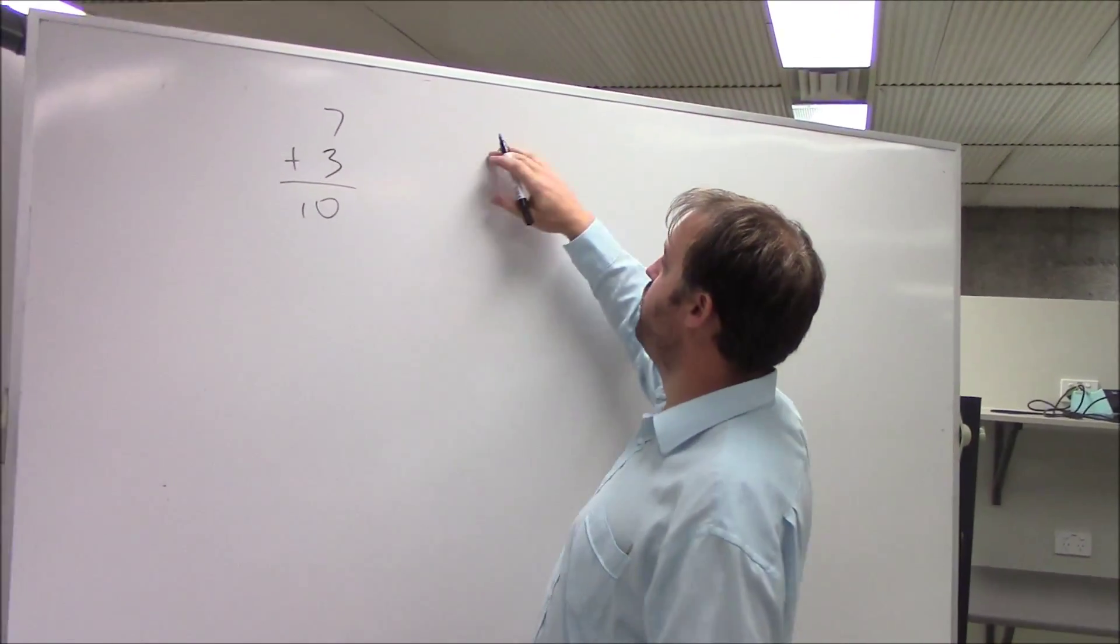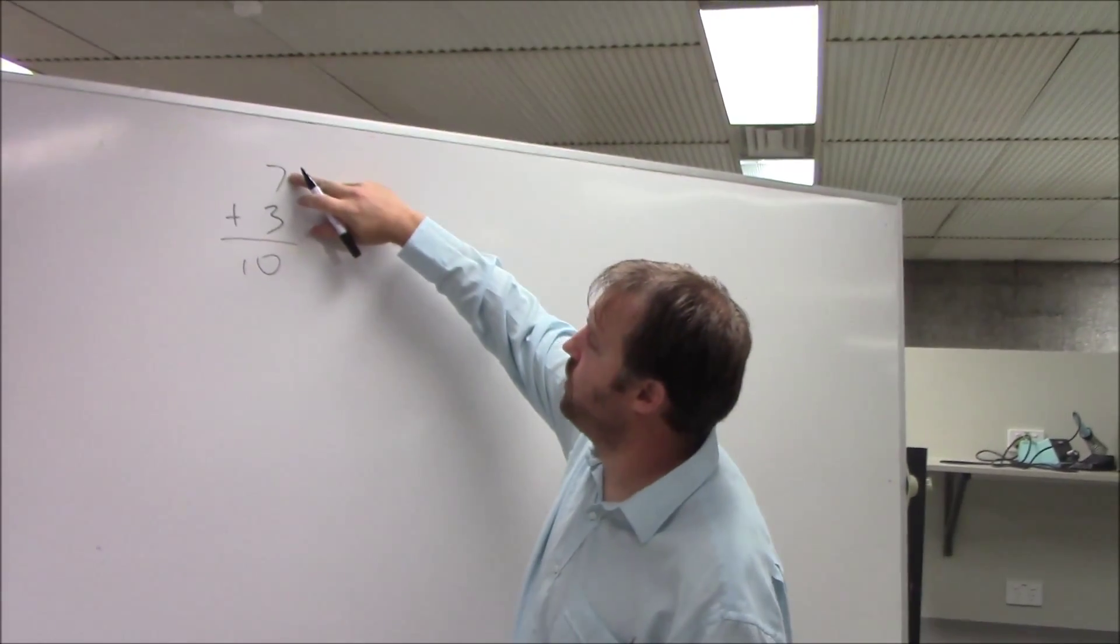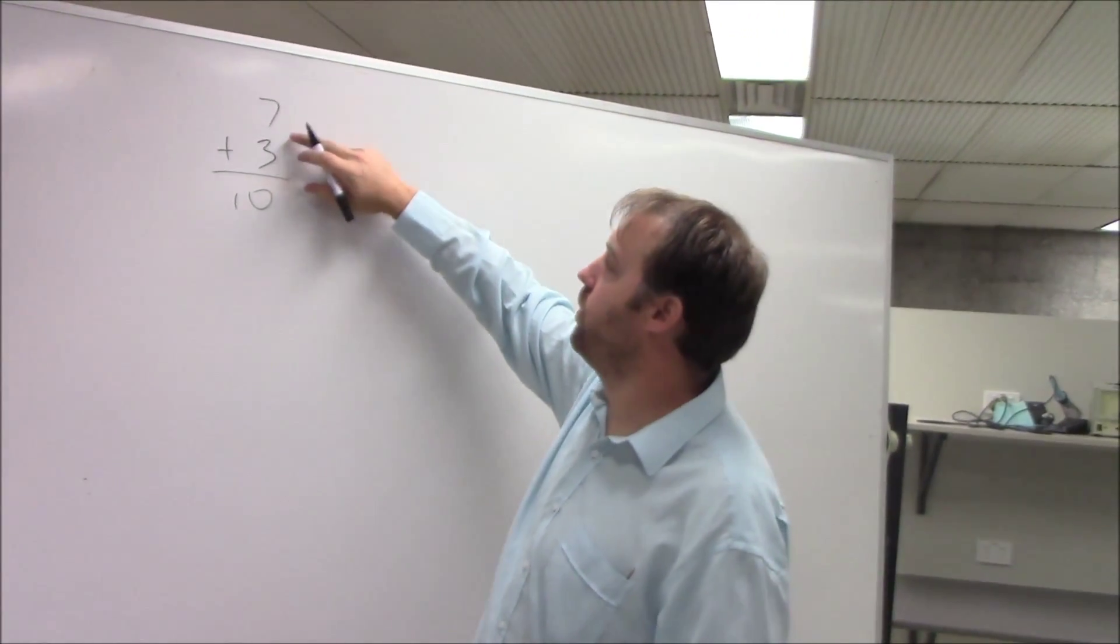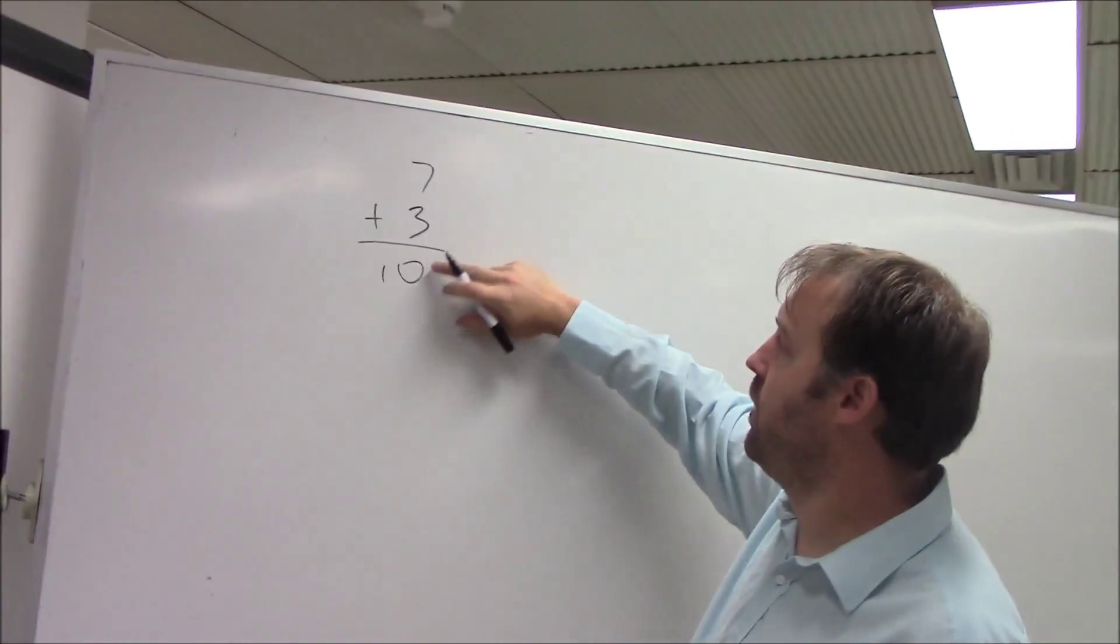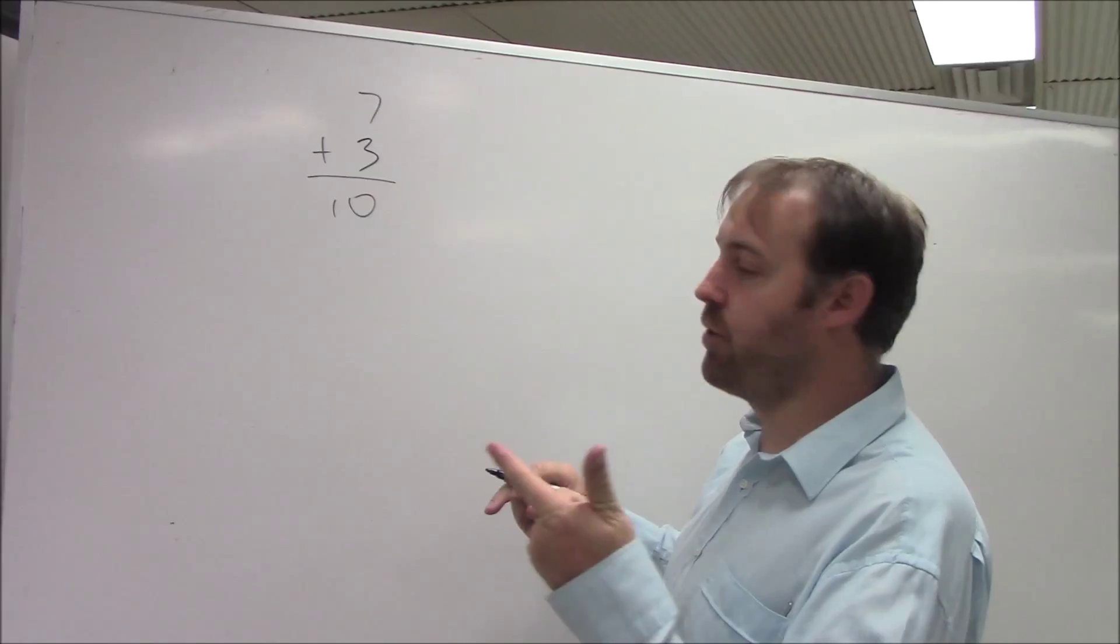But if I were to have this in binary, we can see what's happening here. If I count from 7, if I count up 3, I'm going to reach, so I go 7, 8, 9, and the third one, I've run out of digits.